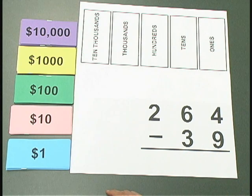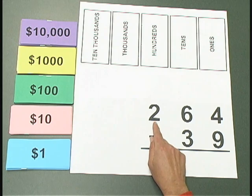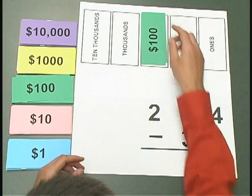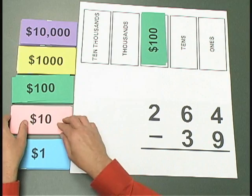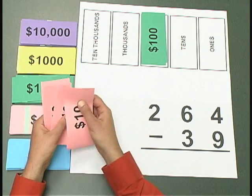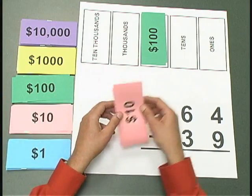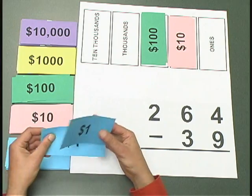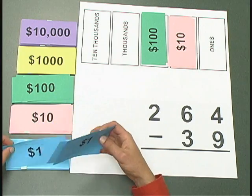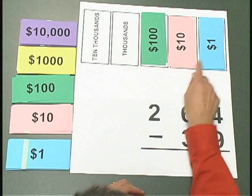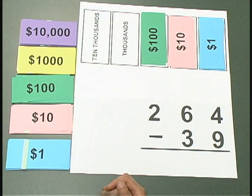Let's count out $264. We have two 100s, six 10s — one, two, three, four, five, six — there's my six 10s. And four 1s — one, two, three, four. So right here I have $264 counted out.